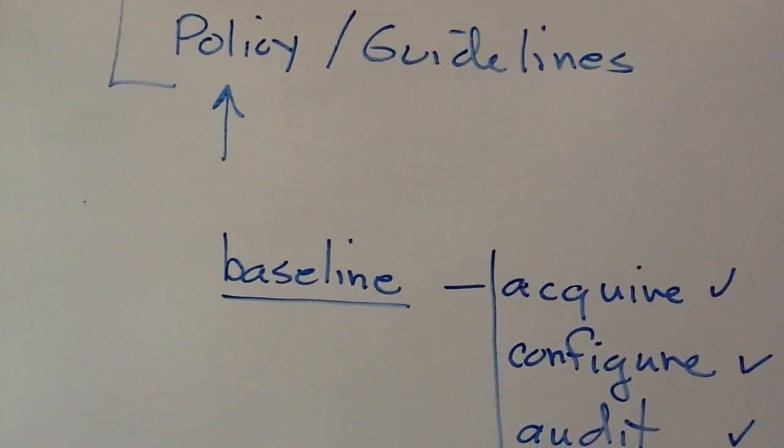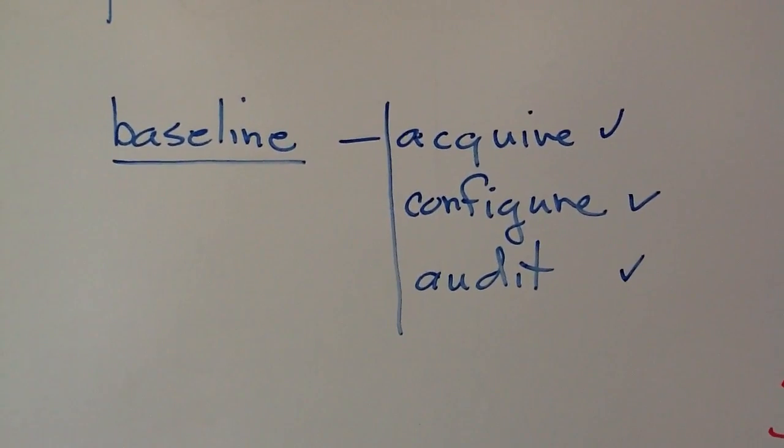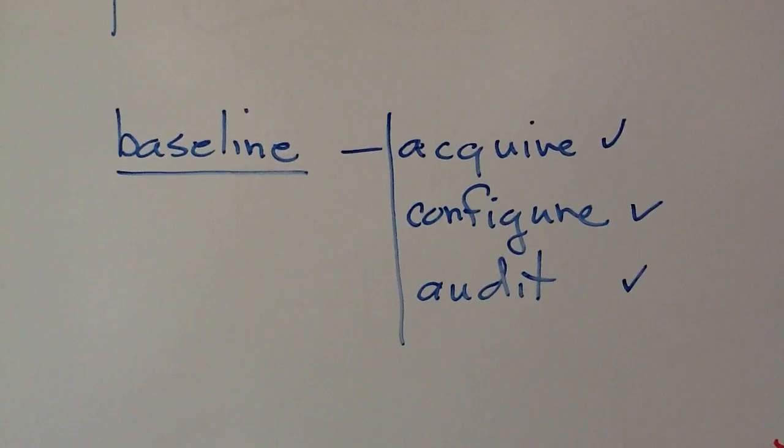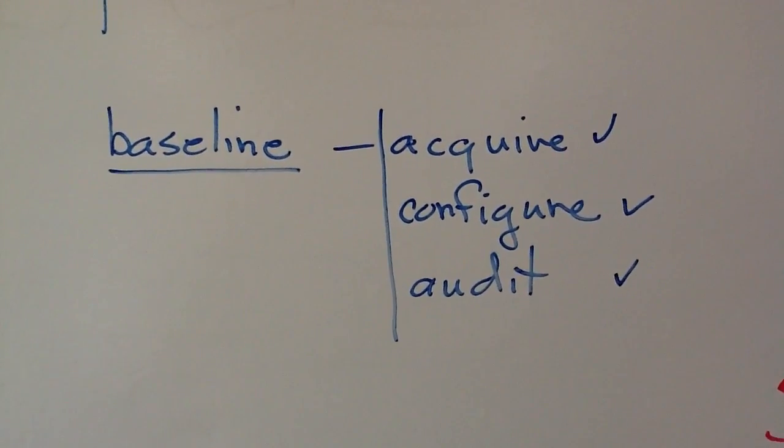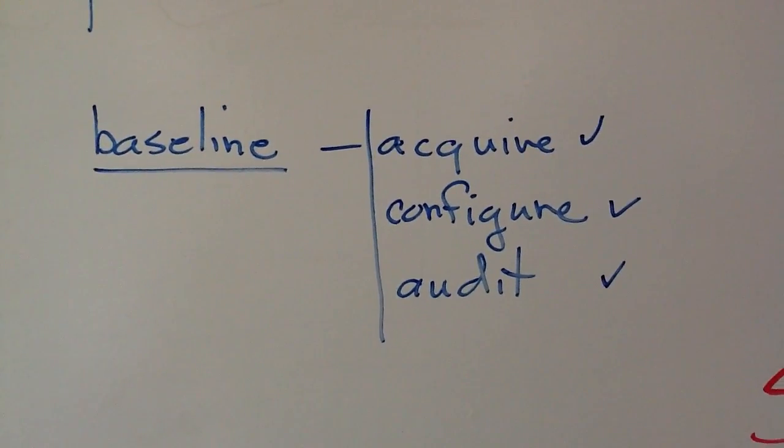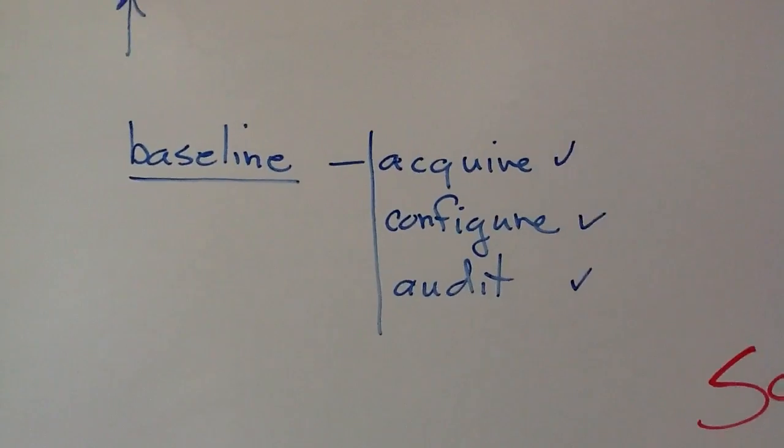Your steps in developing your policy: you have to start out with a baseline. You create a baseline, you acquire the information, how much traffic, times a day, and so forth. You have a baseline on what you need to do when you configure devices, and then you have to audit, keep track of what is occurring.